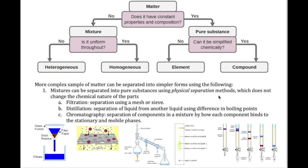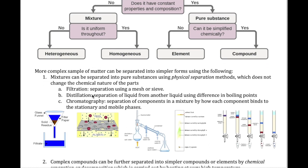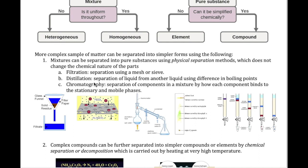Mixtures can be separated using physical separation methods, which are ways we separate things without actually changing the chemical nature of the different parts. For example, filtration: if I have sand and water, I can separate them by pouring the mixture through a funnel with filter paper. The sand gets trapped in the filter paper while the water flows through. When separated, the sand is still sand and the water is still water — I haven't changed the chemical nature of either component.